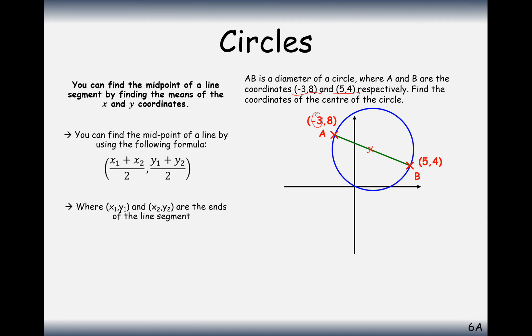So, the middle number between minus 3 and 5 is 1, and the middle number between 8 and 4 is 6. So, the coordinate for the centre is 1, 6. Alternatively, you could use the formula to get 1, 6 as well.